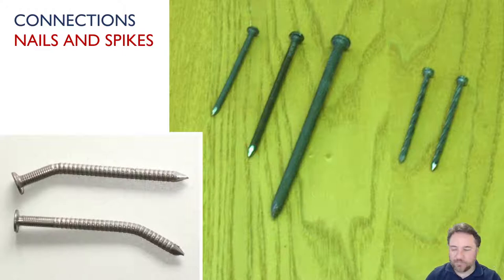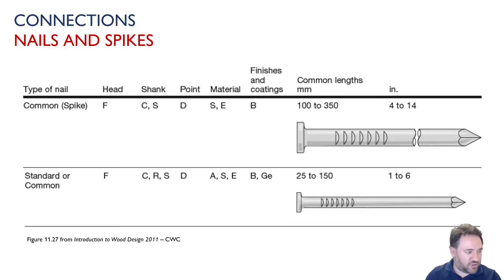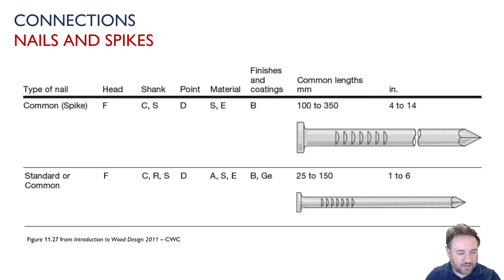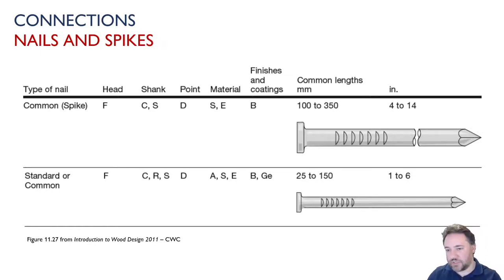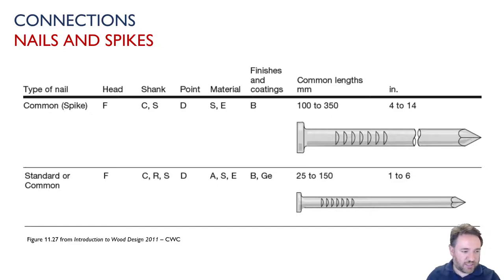This is from the Introduction to Wood Design book, which has pictures of nails and their lengths. In the standard, there are actual selection tables for nails, which we'll look at when we cover the details of nailed connection design. You can see different shanks and different heads — the spike is on top and the regular nail is on the bottom, and the difference is basically just in size.